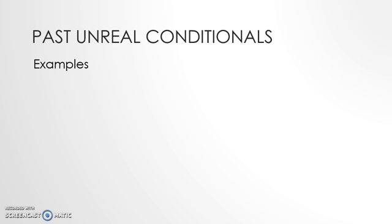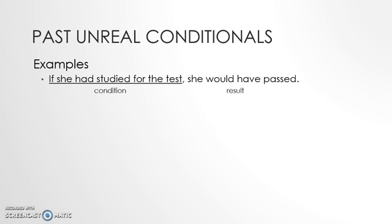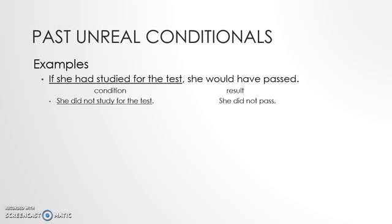Let's take a look at several examples of past unreal conditional sentences. If she had studied for the test, she would have passed. In this past unreal conditional sentence, we have the if clause — 'if she had studied for the test' — that's the condition which is untrue, it's not real. And we have 'she would have passed,' which is an untrue or unreal result. So if we rewrite the sentence to give us the same meaning, we can see that she did not study for the test and she did not pass.